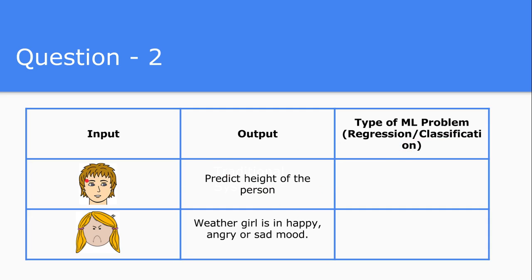The first problem: given the face of a person, the output will be the predicted height of that person. In the second case, given the face of a girl, we need to find whether she is in a happy mood, angry mood, or sad mood. Pause for a couple of minutes, think about it, and come back. This will help you grasp the actual difference between regression and classification in a supervised machine learning system.